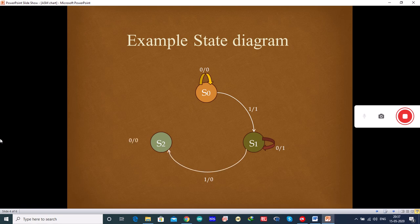When input is 0 and output is 0, it remains in the same state S2. And when input is 1 and output is 1, it goes back to the state S0. This is the example state diagram I have taken. And now let us draw the ASM chart for this particular state diagram.